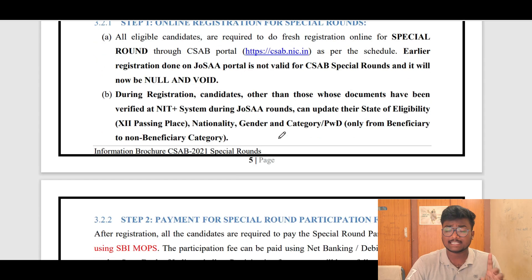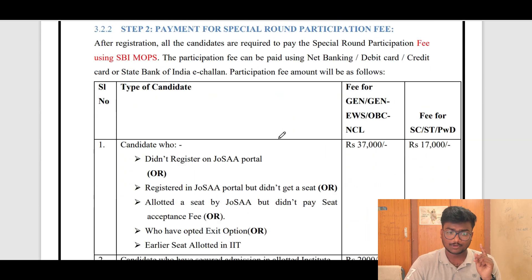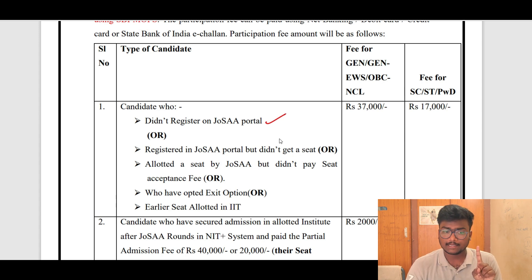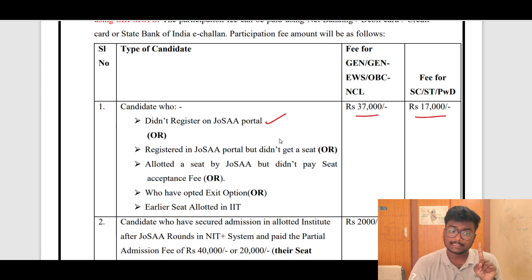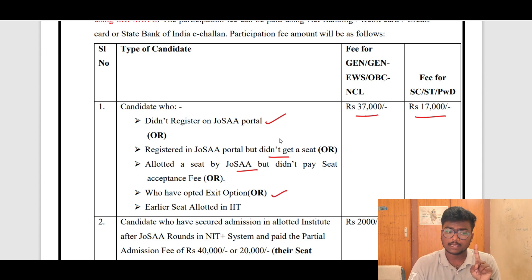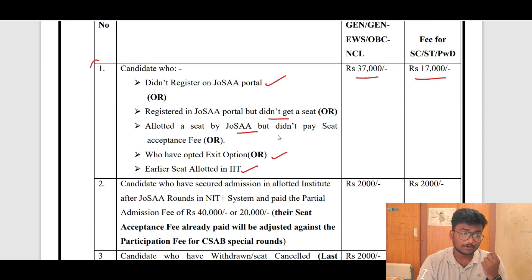So first, after registration you need to pay the fees. How much? For candidates who did not register on JOSA portal — meaning first-time participants — for General, EWS, OBC it is 37,000, and for SC, ST, PWD it is 17,000. Candidates registered in JOSA portal but who did not get a seat should also pay this amount. Candidates allotted a seat by JOSA but who did not pay any seat acceptance fee should also pay this amount. Those who opted for exit option in JOSA should also pay this amount. Even those who had an earlier seat allotted in IIT should pay this amount.